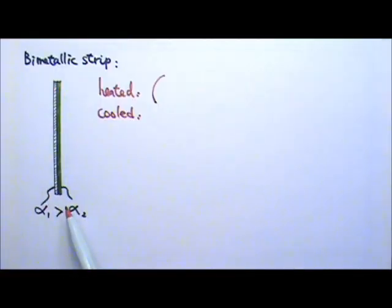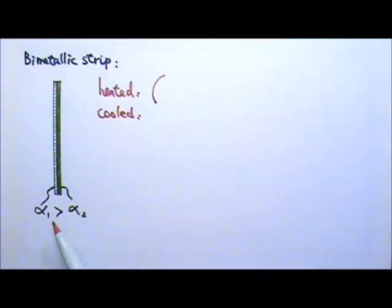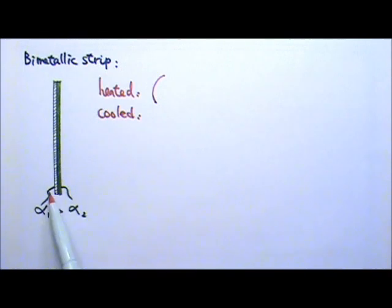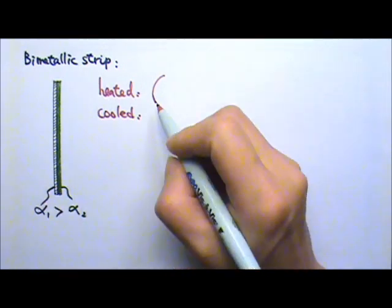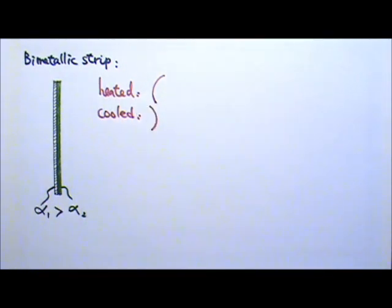So this bimetallic strip would curl this way when heated, because the side with the larger alpha would expand more. When cooled, the side with the larger alpha would contract more, so when it's cooled, it would curl the other way.